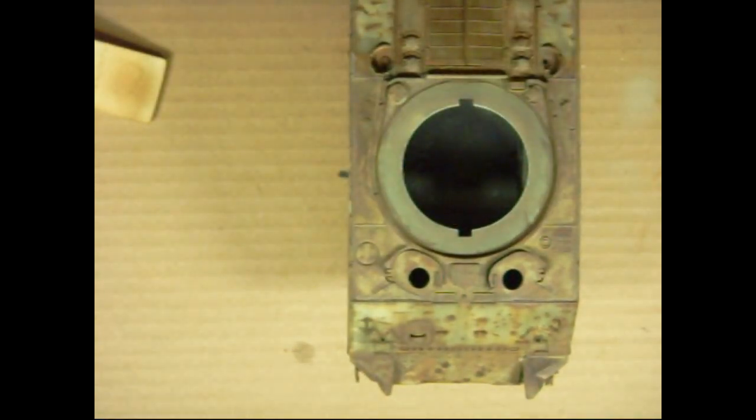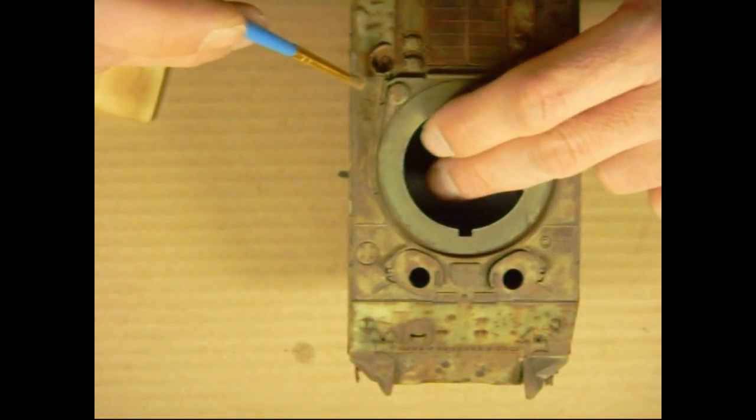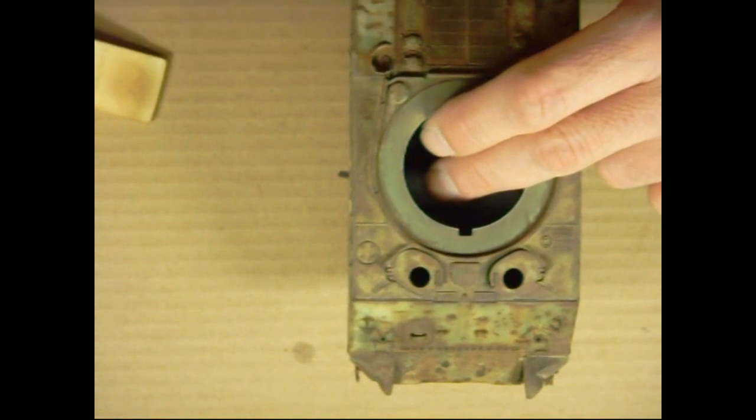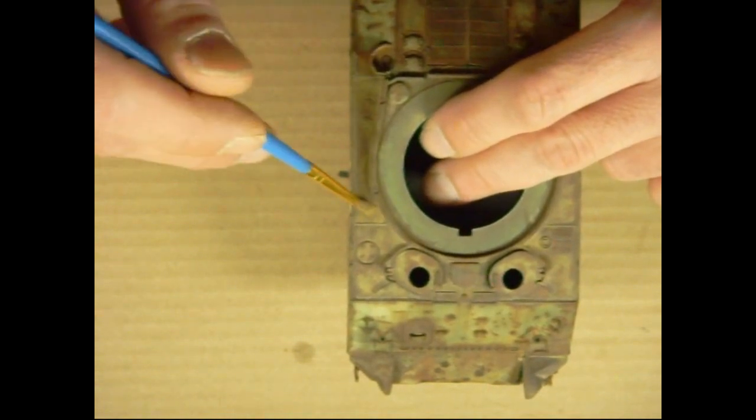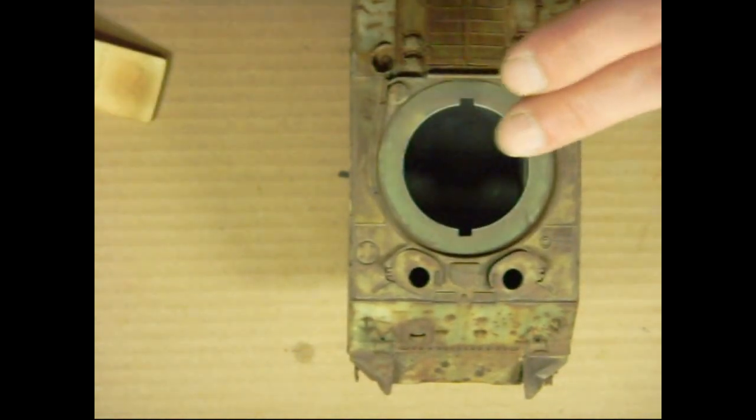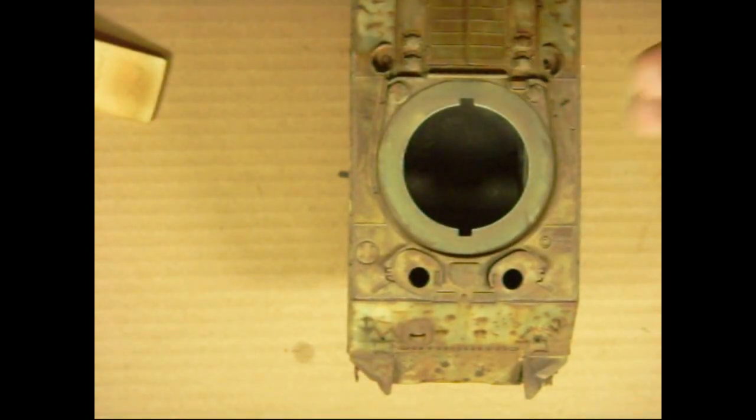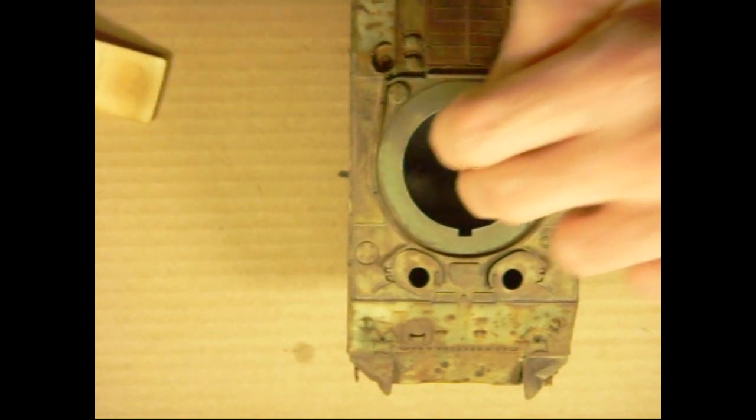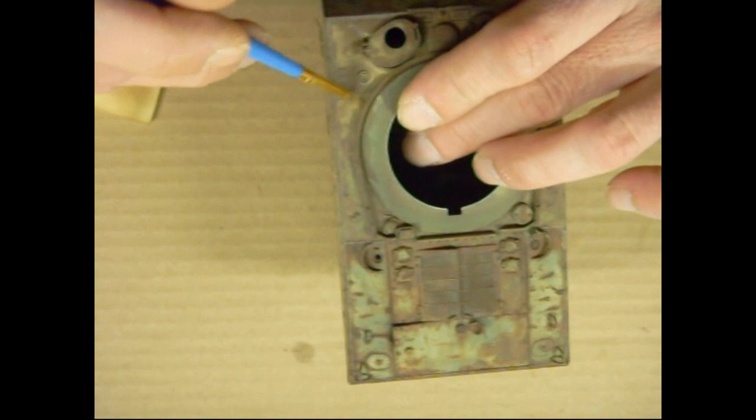You can always add some more pigments, dry, if you've removed too much, without wetting the surface. Just give it a dusting. Once it dries, it'll look similar to that side. I can go ahead and add some more in there.